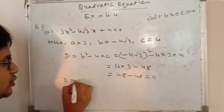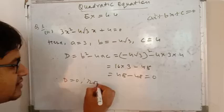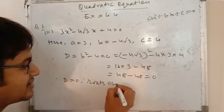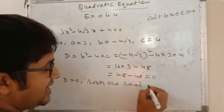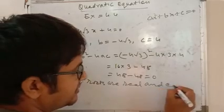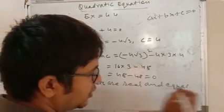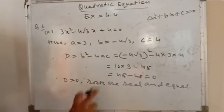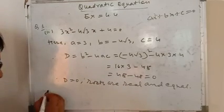Therefore D equals to 0. It means roots are real and equal. Roots are real and equal. Why? Because D equals to 0. Now you find...